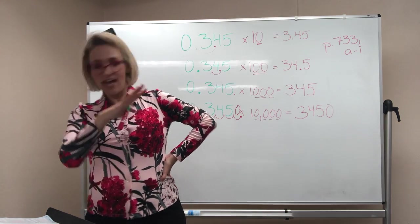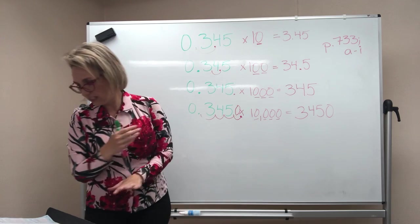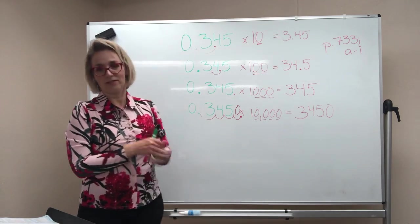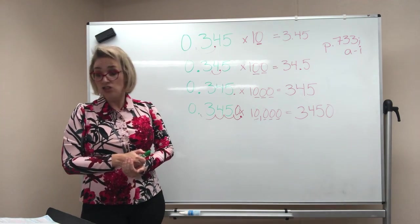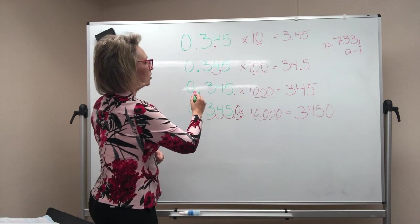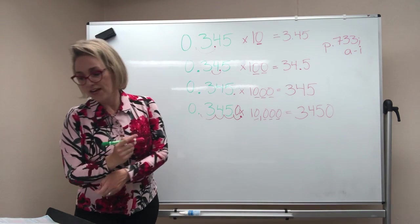And then D, E, and F are another set like this. And G, H, and I are another set like this. Does that make sense? So you're just shoving decimals over. Remember the decimal goes, when you multiply, the decimal goes to the right.